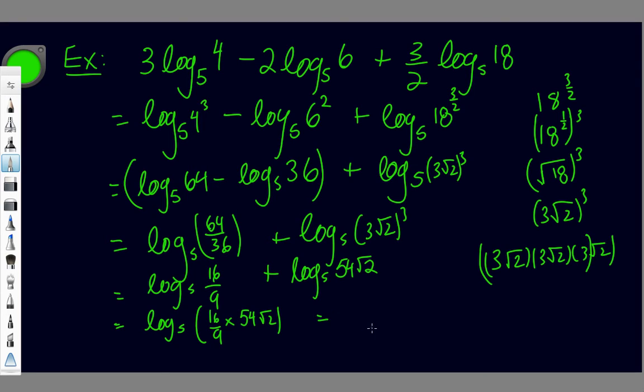And then that just simplifies down - 16 over 9 times 54, that's actually 96√2. And there it is. There's my complex unsimplified expression written as a single log, exact log. That's a really useful skill to use because in the future, you're probably going to have to start solving some log equations like that. So why don't we do one now, actually?